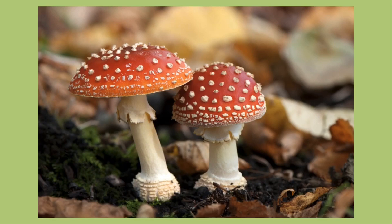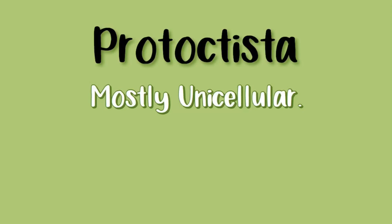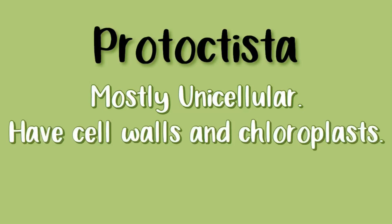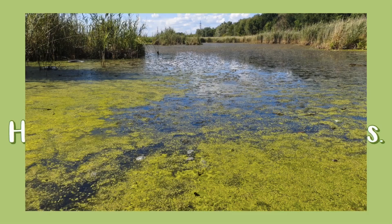Here is an example of a fungus. Now, what about protoctista? Well, most of them are unicellular. They have cell walls and chloroplasts, and some of them feed by photosynthesis, such as algae.